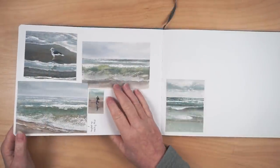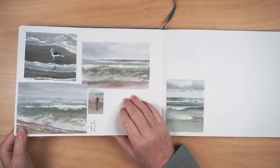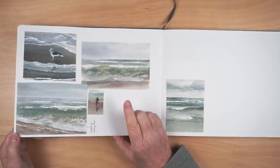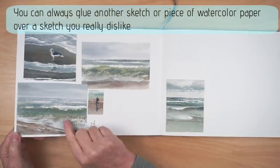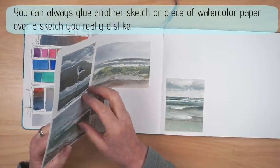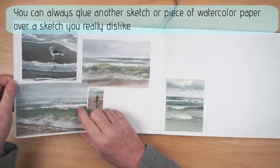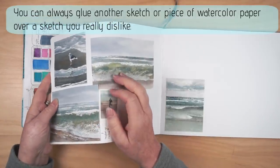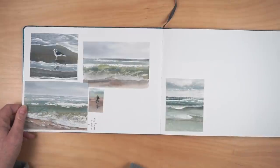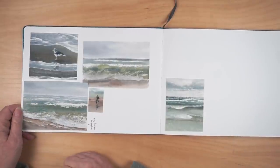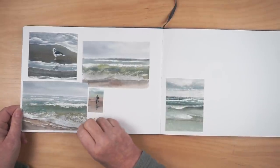Another way to take the stress out of working in your brand new sketchbook is to remind yourself that if something doesn't turn out you can always put another piece of watercolor paper on top of it. So here's an example where I just glued in a postcard on top of a sketch that didn't really work out for the technique I was experimenting with.